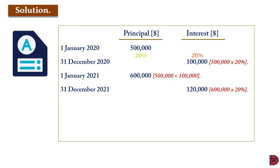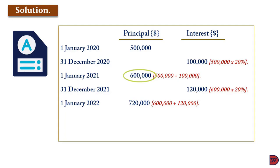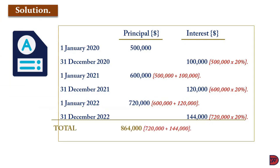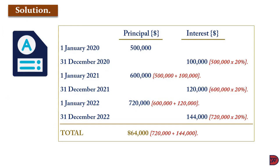The interest on the original principal is $100,000, and the interest on the previously earned interest of $100,000 is $20,000, making the total $120,000. The new principal at the beginning of 2022 becomes $720,000. The interest on 31st December 2022 will be $144,000, which is 20% on $720,000. So the total amount to Eliana's credit is $864,000, which is $720,000 plus $144,000.